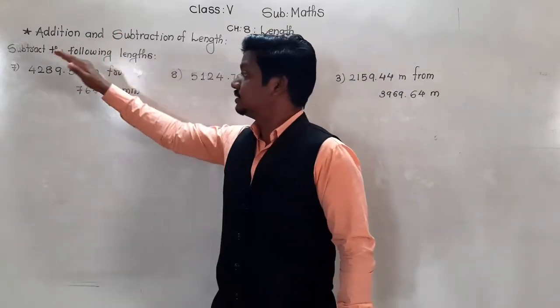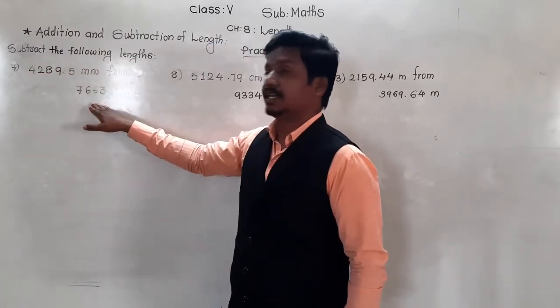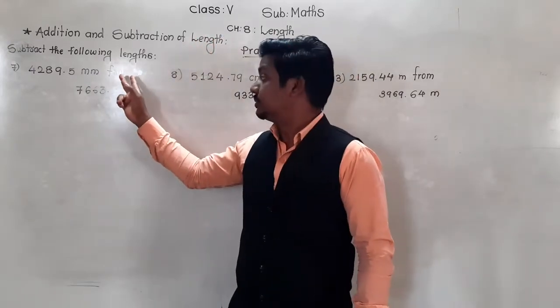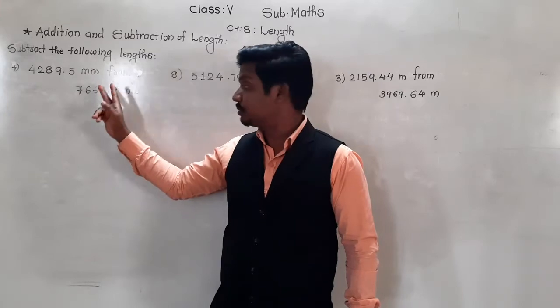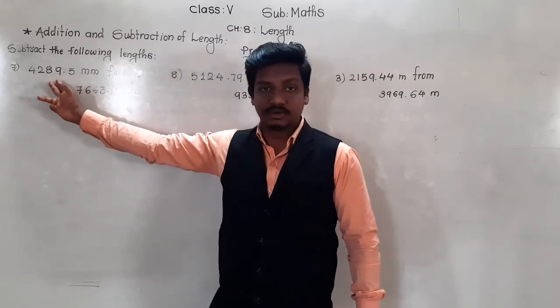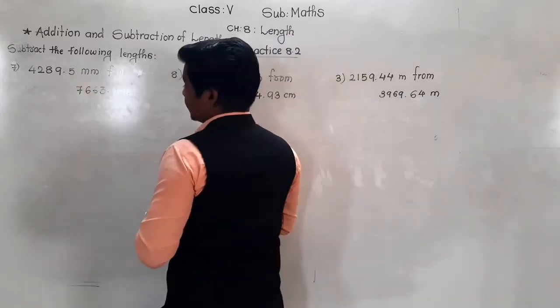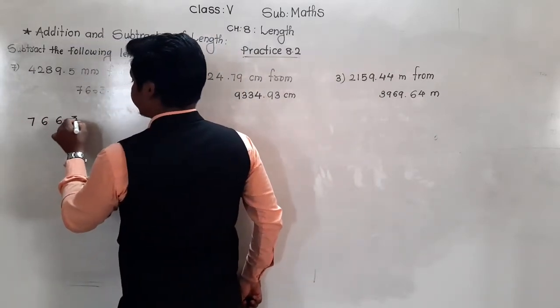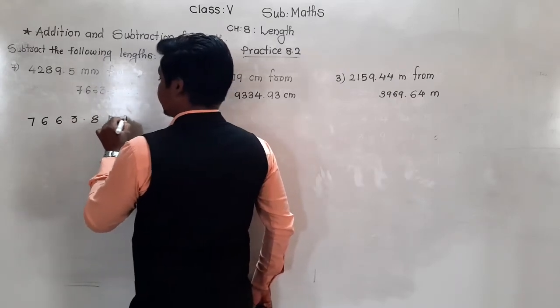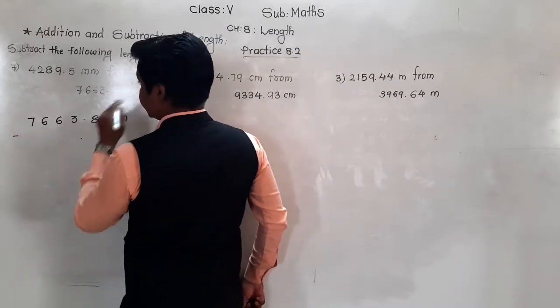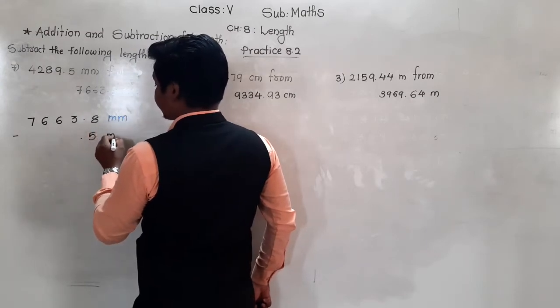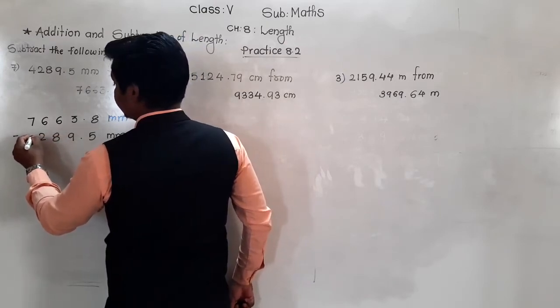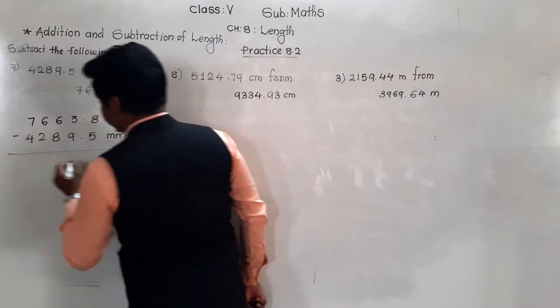Example number 7: 4289.5 millimeter from 7663.8 millimeter. Subtract term means we have to subtract this length from this length. We have seen in fractions the number which is written after 'from' is greater. So from this number we have to subtract this smaller number. So we write 7663.8 millimeter minus, decimal point here as usual, 5, 9, 8, 2, 4. In this way we have to arrange them. Then subtract.